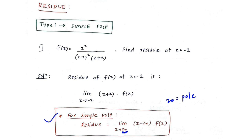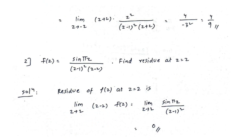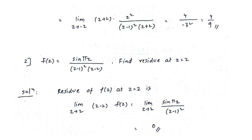Applying the formula: limit as z tends to minus 2 of (z plus 2) into f of z. After substituting f of z and simplifying, the (z plus 2) terms cancel. Substituting z equals minus 2 gives 4 divided by (minus 3) squared, which equals 4 by 9.